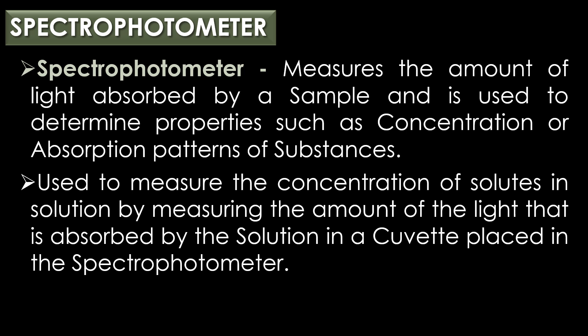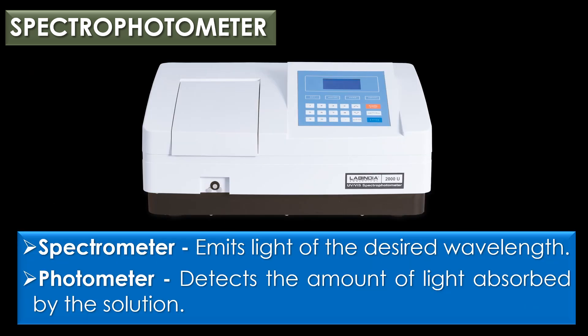A spectrophotometer is a laboratory instrument that measures the amount of light absorbed by a sample and is used to determine properties such as concentration or absorption patterns of substances. Spectrophotometer techniques are mostly used to measure the concentration of solutes in solution by measuring the amount of light absorbed by the solution in a cuvette placed in the spectrophotometer. The spectrophotometer generally consists of two different devices: a spectrometer and a photometer. The spectrometer emits light of the desired wavelength and the photometer detects the amount of light absorbed by the solution.